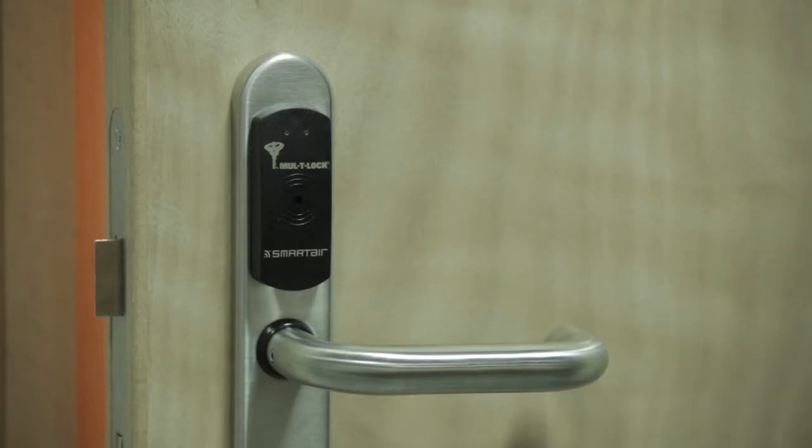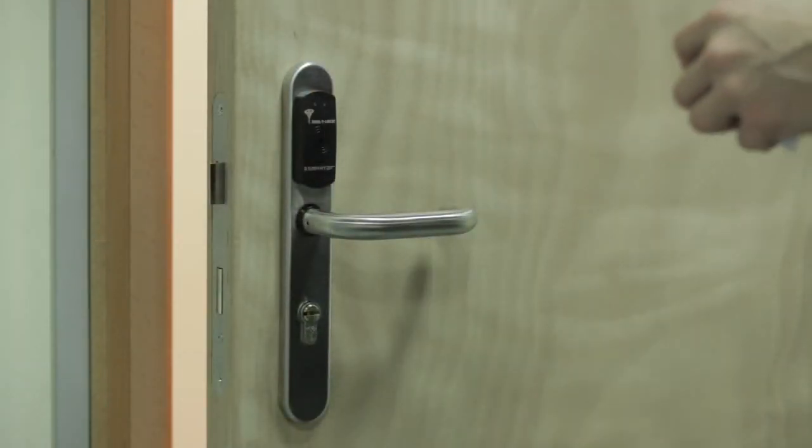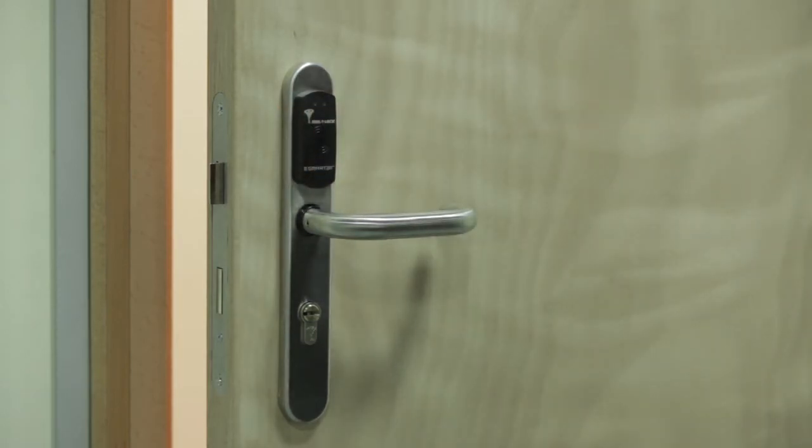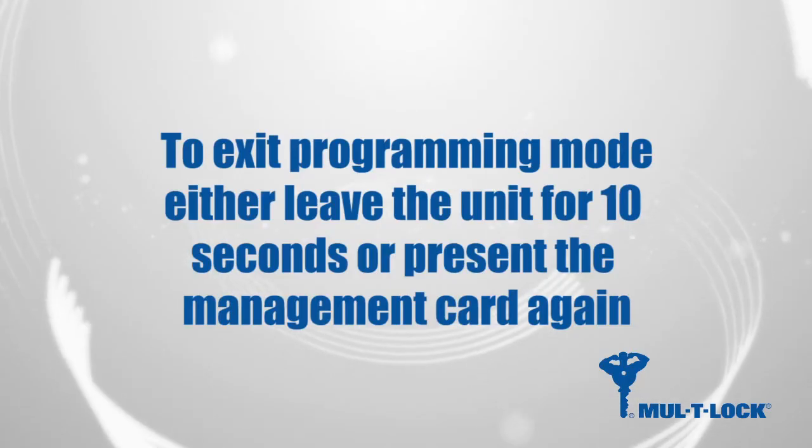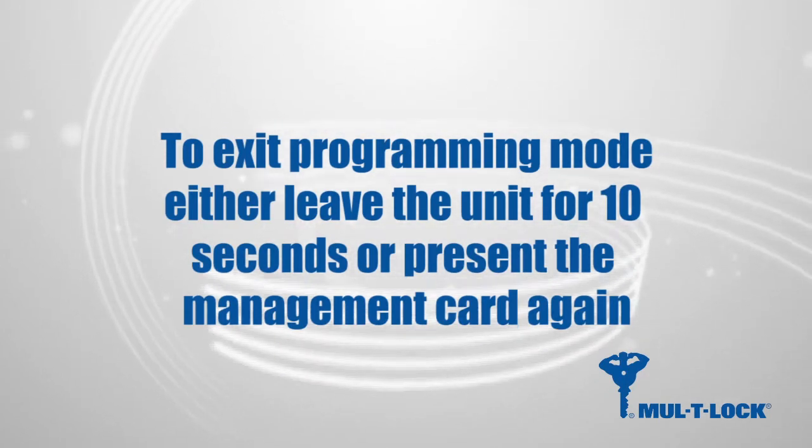To program a user, present the shadow management card to the reader once. The red and green lights will flash simultaneously. Then present the user card or fob followed by the shadow card, and repeat this process for all the required users. To exit programming mode, either leave the unit for 10 seconds or present the management card again.